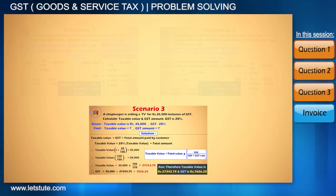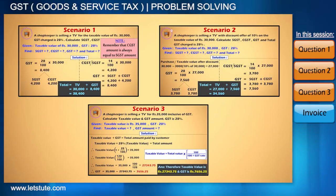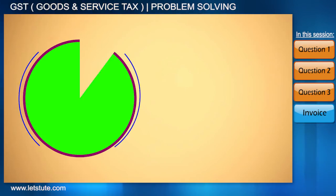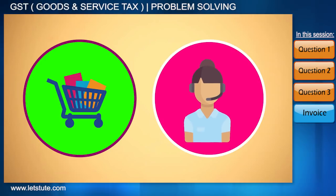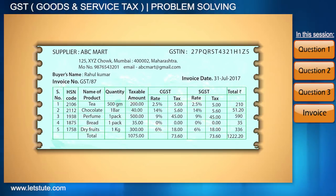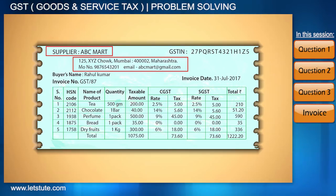This is how one can calculate GST, CGST, SGST, the total amount of the product, and also the taxable amount. Keep in mind that whenever we purchase anything or take any kind of service, we get an invoice for the same. So let's have a look at a GST invoice. It is the same as any other invoice — it has name, address, phone number, date, etc.